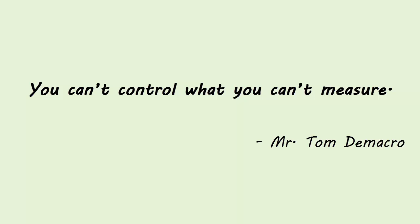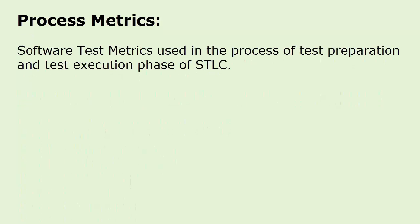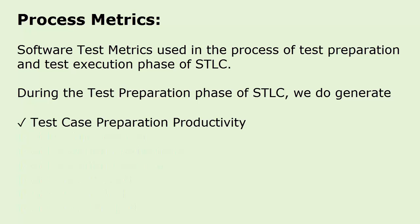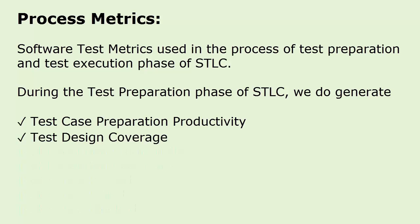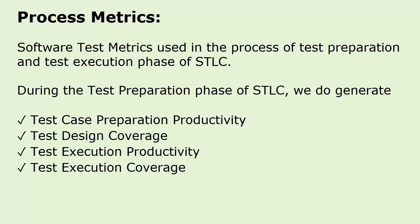Metrics answer different questions, and it's important to decide what questions you want answers to. Software test metrics are classified into two types: process metrics and product metrics. Process metrics are software test metrics used in the process of test preparation and test execution phase of STLC. Check out our video on what is STLC and its phases. During the test preparation phase of STLC, we generate several metrics.